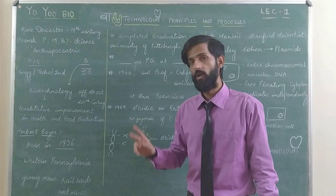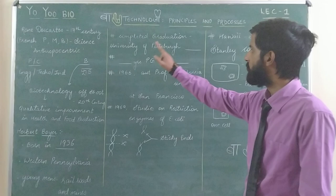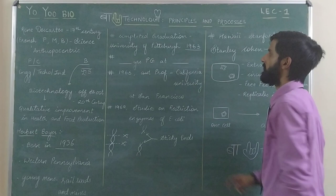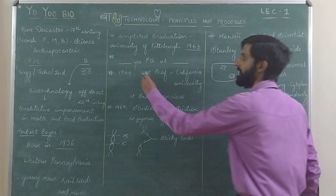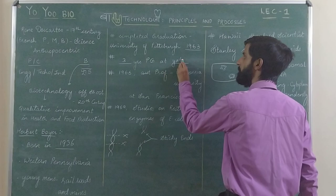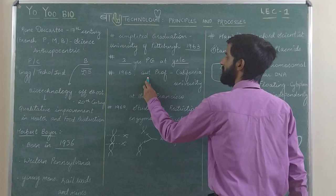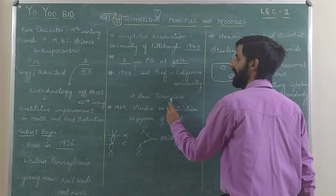This scientist completed his graduation at the University of Pittsburgh in the year 1963 — born in 1936, flip 36 to get 63. He did 3 years of post-graduation at Yale, completing in 1966. Then he got an assistant professorship at the University of California, San Francisco, in 1969.